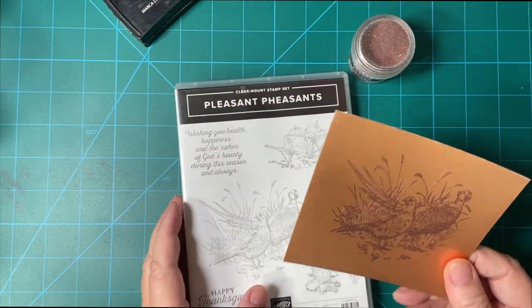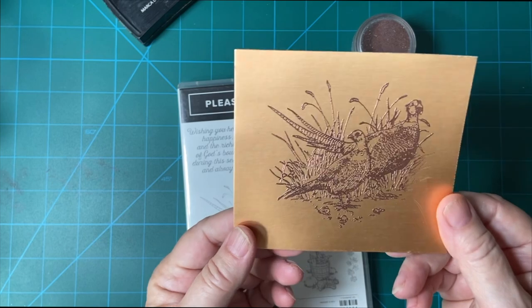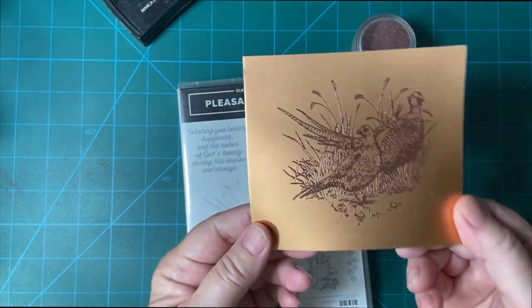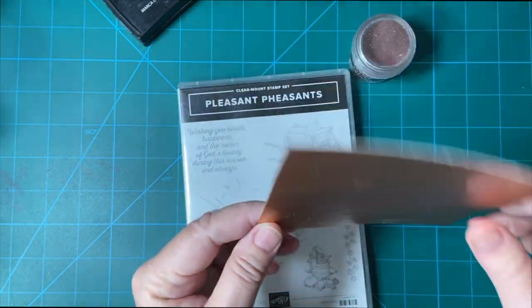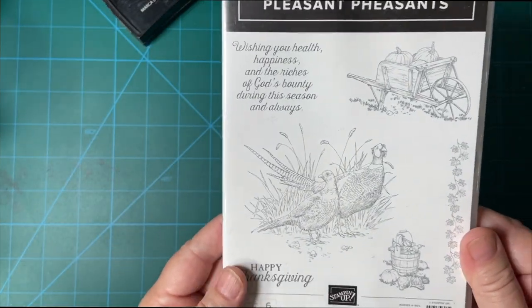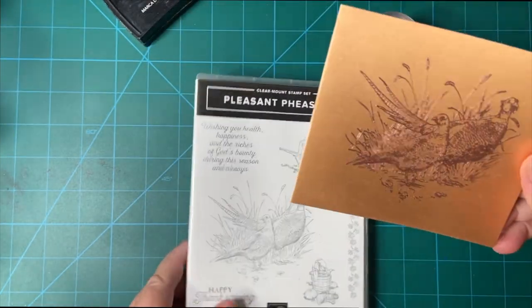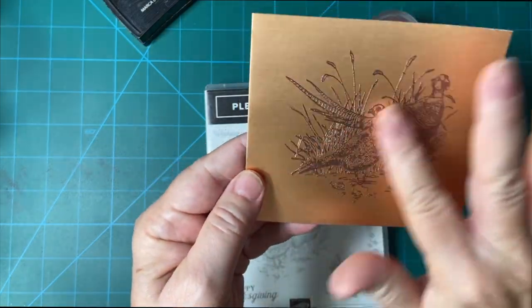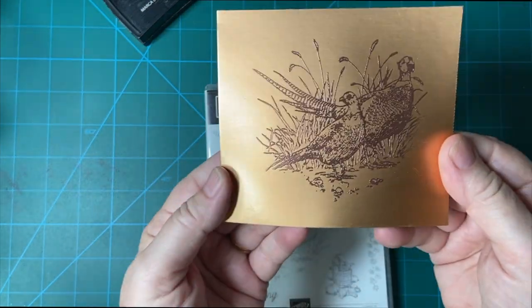Thank you so much for joining me today. Today we're going to be doing some heat embossing using copper on copper cardstock. I'm using my Pleasant Pheasants from Stampin' Up and I decided to use copper because it's a nice contrast.